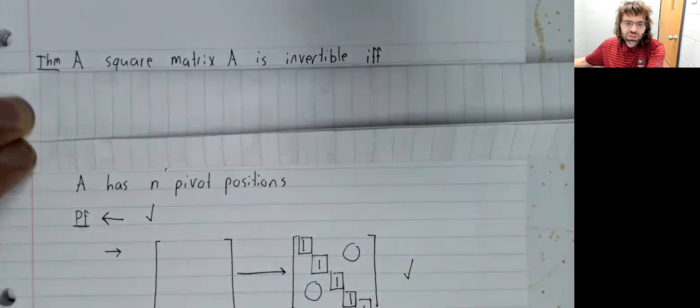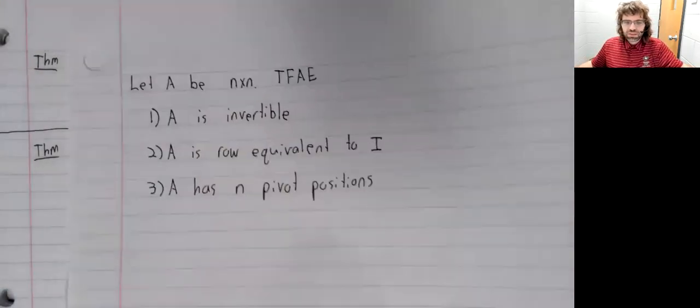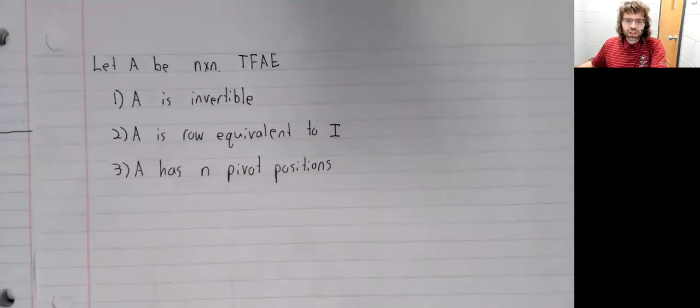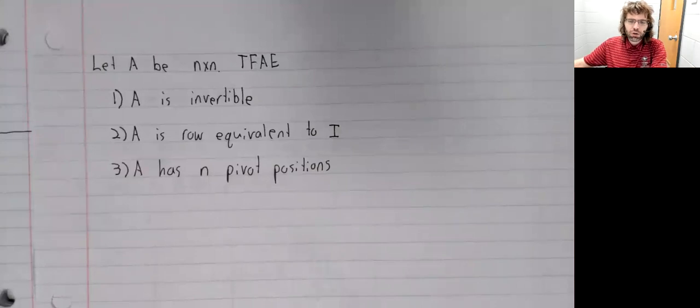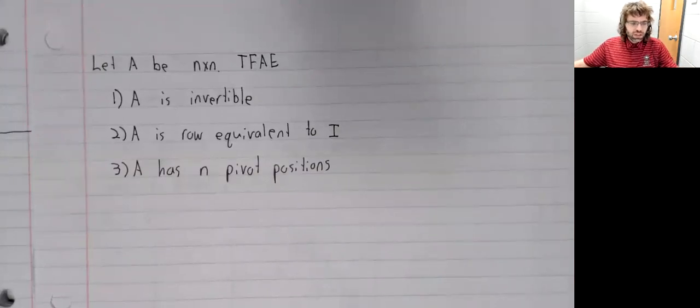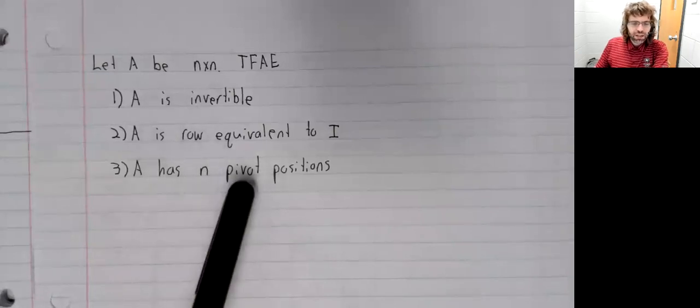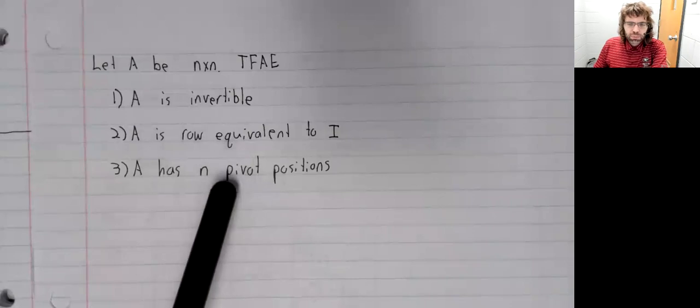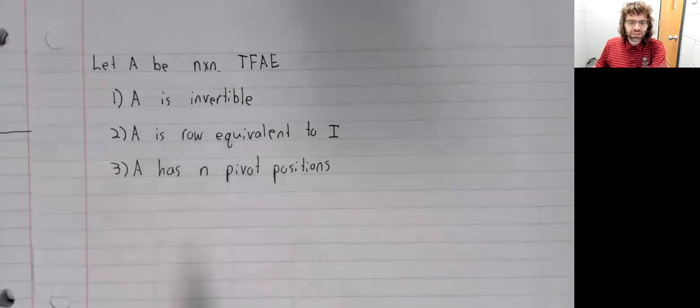We could summarize that by saying the following are equivalent: A being invertible, A being row equivalent to I, and A having n pivot positions. And as we move through the rest of this section, we're going to add to this list.